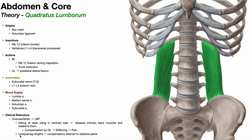Another way the QL can become overused is when somebody has unequal leg lengths that has gone untreated. If the right leg is quite a bit longer than the left, it pushes the right side of the pelvis up and the left side is lower, creating pelvic obliquity. The body tries to normalize this and bring the pelvis level. The quadratus lumborum will elevate that lower side of the pelvis — that hip hike we discussed earlier. If you have to do that constantly, it leads to stiffening of the QL and pain, due to a compensatory attempt to stabilize the pelvis and minimize the obliquity.